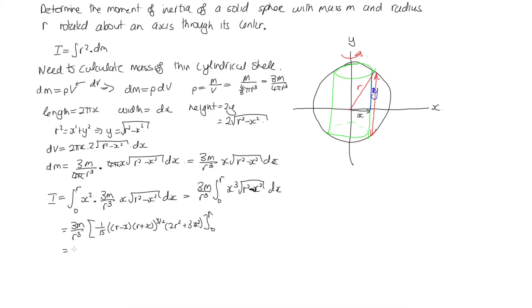So evaluating this: 3m over r³, let's pull the 1/15 out the front, and then I've got minus. Now when I substitute r in here, this very first term is 0, because everything here is multiplied together, that complete first term is 0. So now I'm putting in the 0. So that's minus minus. So I've got r minus 0, r plus 0, which is r² to the power of 3/2, so that's r³, and then I'm putting 0 in here, so that's times 2r².